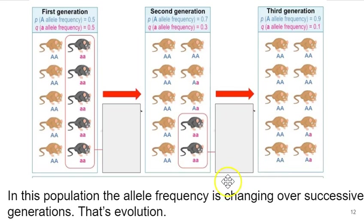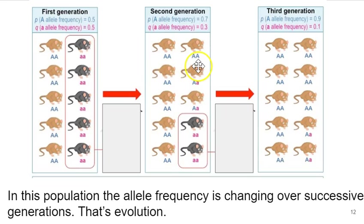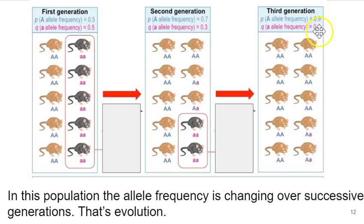This isn't a real study — in a real study you need a larger sample size. But in this first generation, the allele frequency for big A and little a was calculated as 0.5 and 0.5. In the second generation — which we just calculated — it's 0.7 and 0.3. In the third generation, big A is 0.9 and little a is 0.1. The allele frequency is changing over successive generations. That is evidence for evolution — that's what evolution is.